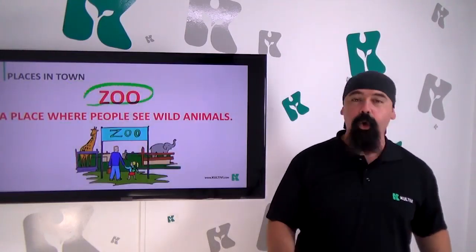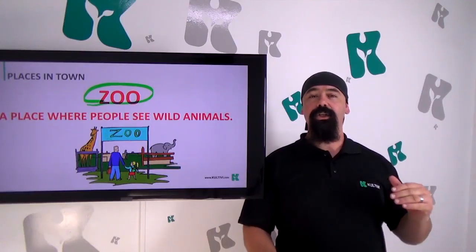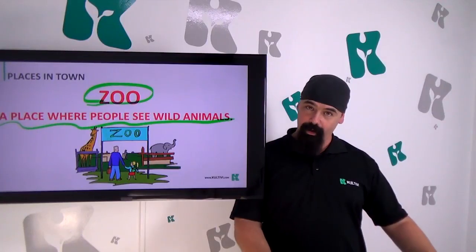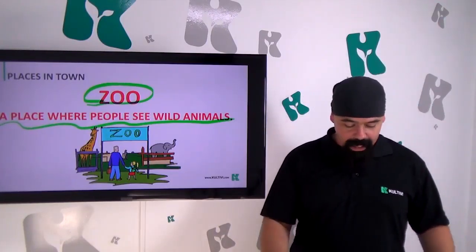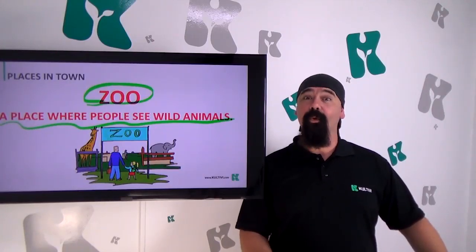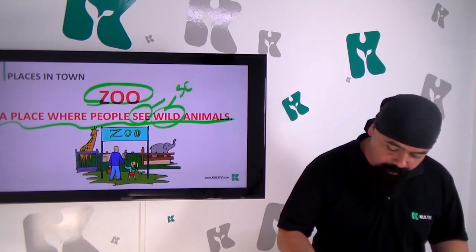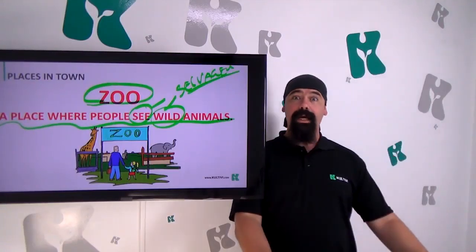E aqui temos o zoo — o zoológico. Repeat: zoo. Note que o O dobrado é extenso: zoo. What is a zoo? A place where people see wild animals. Repeat: a place where people see wild animals. O verbo 'to see' é ver e a palavra 'wild' é selvagem. O local onde as pessoas veem animais selvagens.